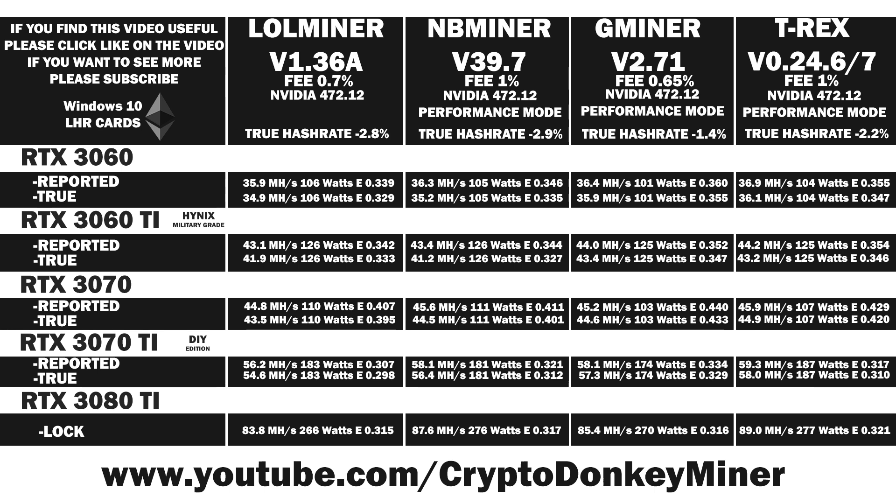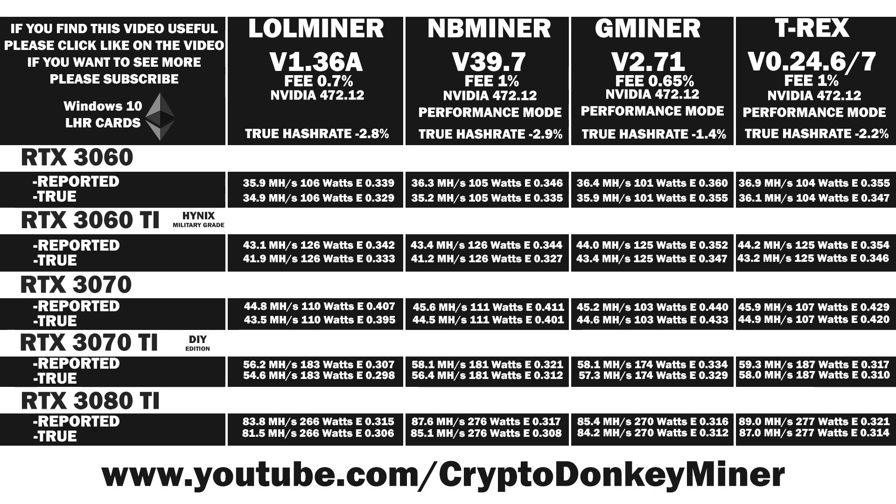Last up, the RTX 3080 Ti. T-Rex Miner is now both the fastest and the most efficient of them all. I know that this may have come as a shock to you, but this is how the picture is right now. This is definitely due to the LHR unlock features, which may not have been tested as well as the non-LHR unlock ETH mining.